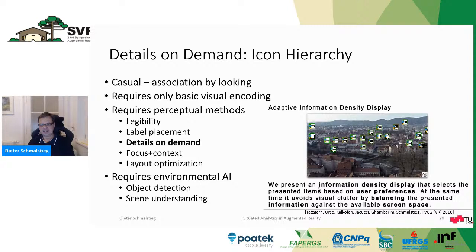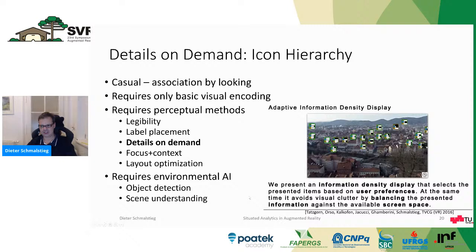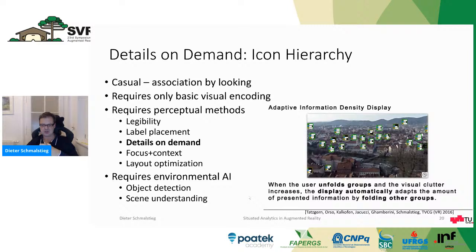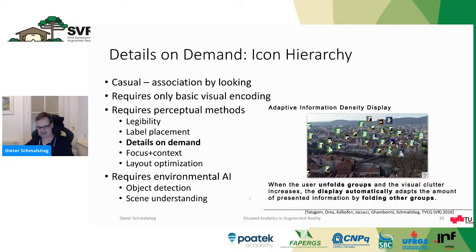Here's another example: details on demand. You cannot show all the information at once. For example, if you have an augmented reality view of a city and a lot of information to present — housing prices visualized with little glyphs — if you show them for all houses, you just have a big mess. The user should be able to dynamically drill down on relevant information. Using a pointer, the user makes a selection and gets more information in certain areas, while other information automatically collapses to an overview. This happens all around the user in the three-dimensional display — a live optimization process trying to show the most relevant information.